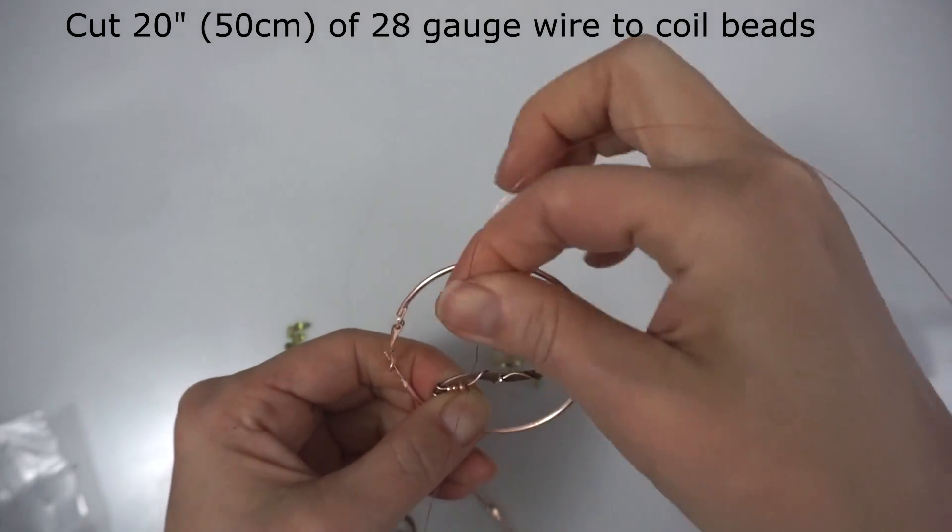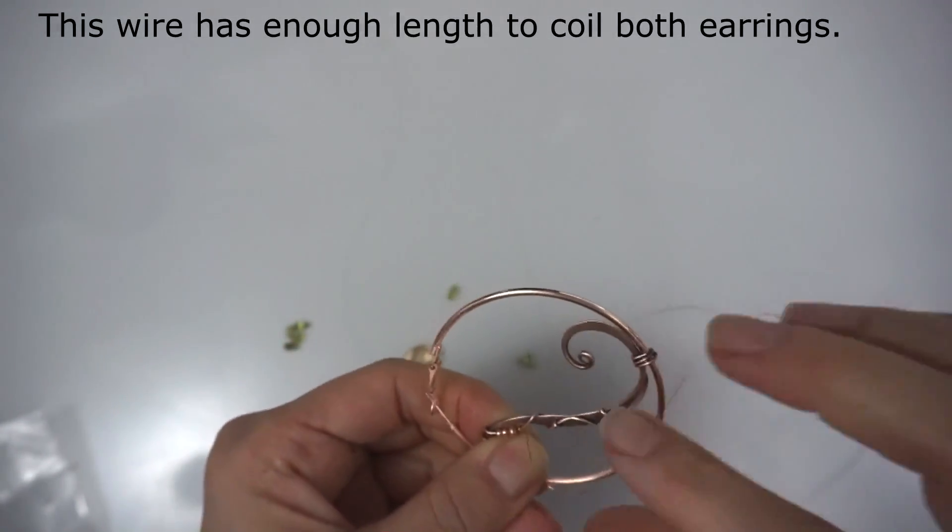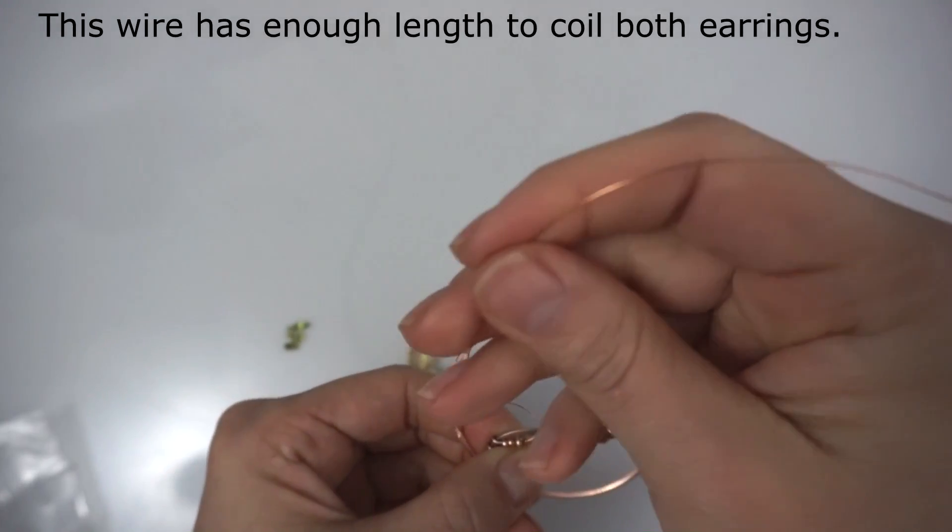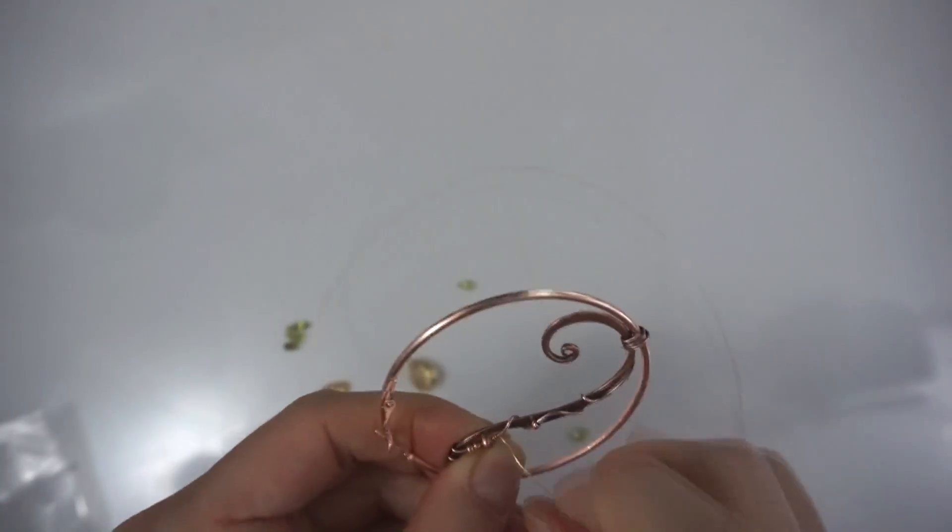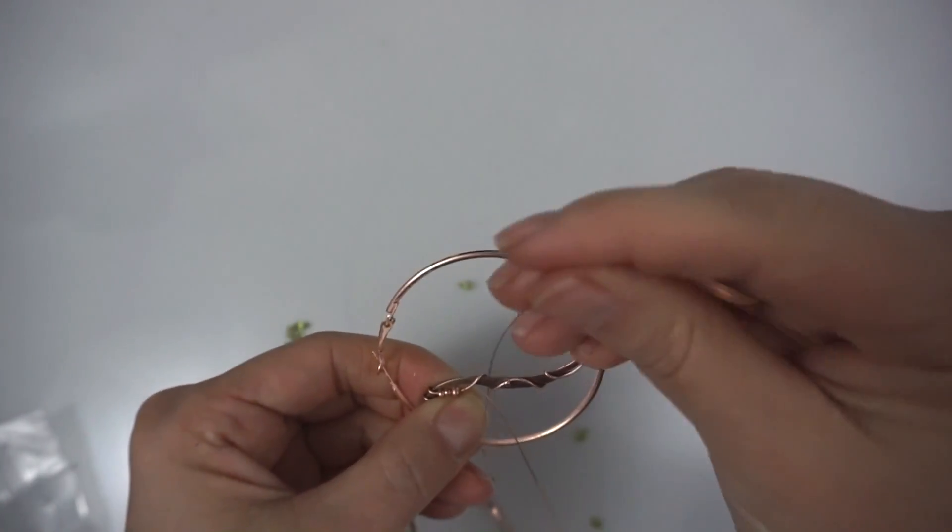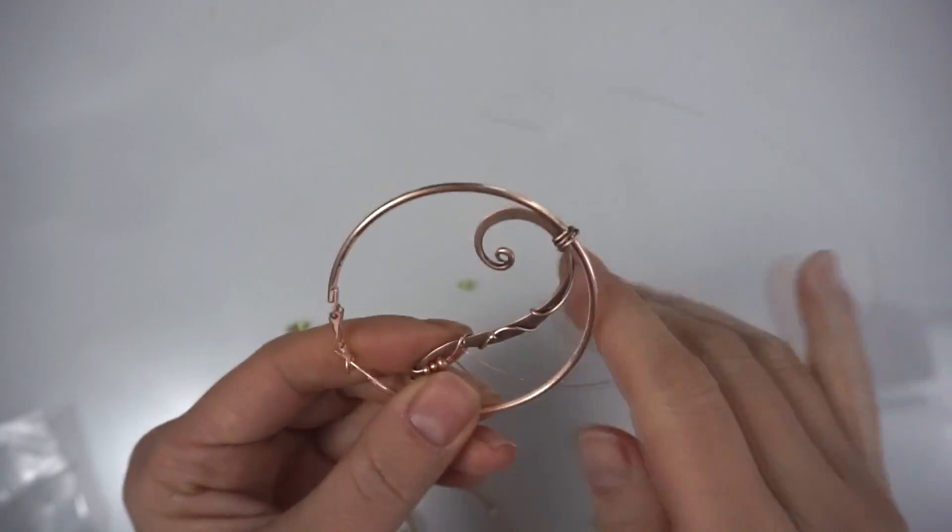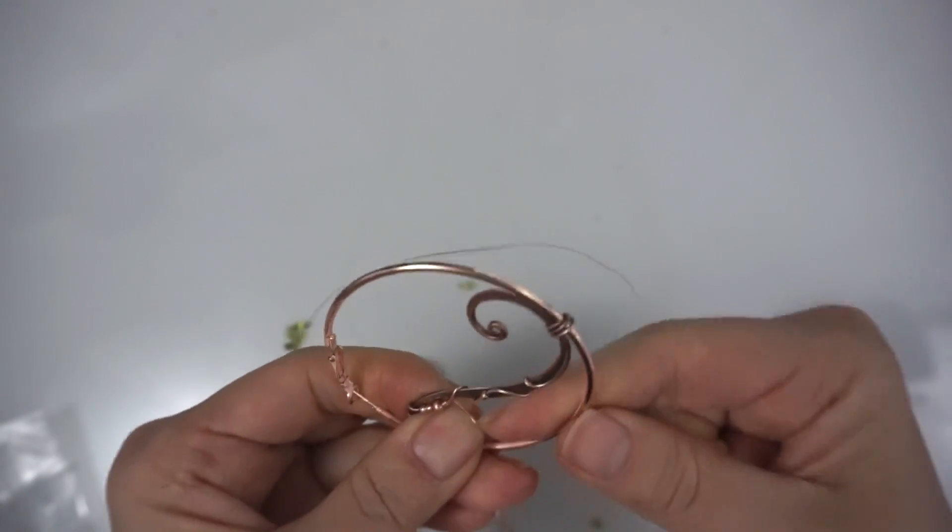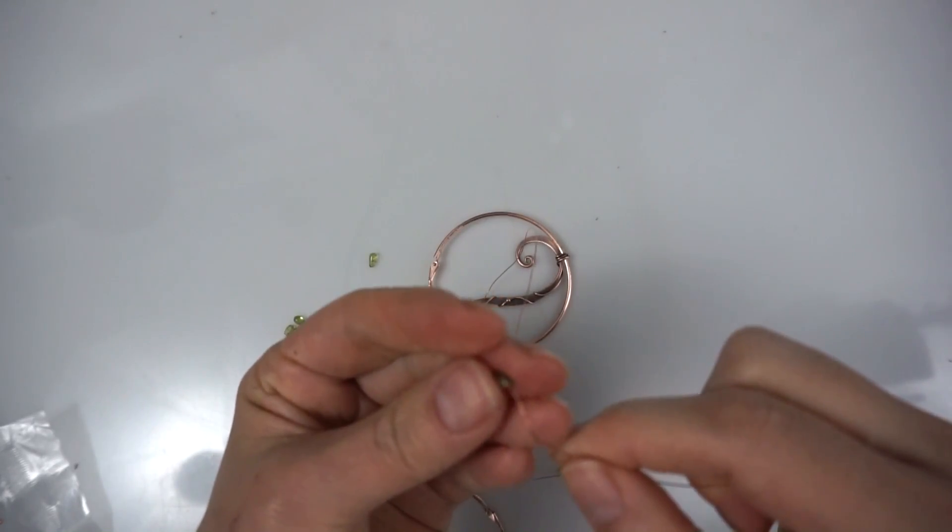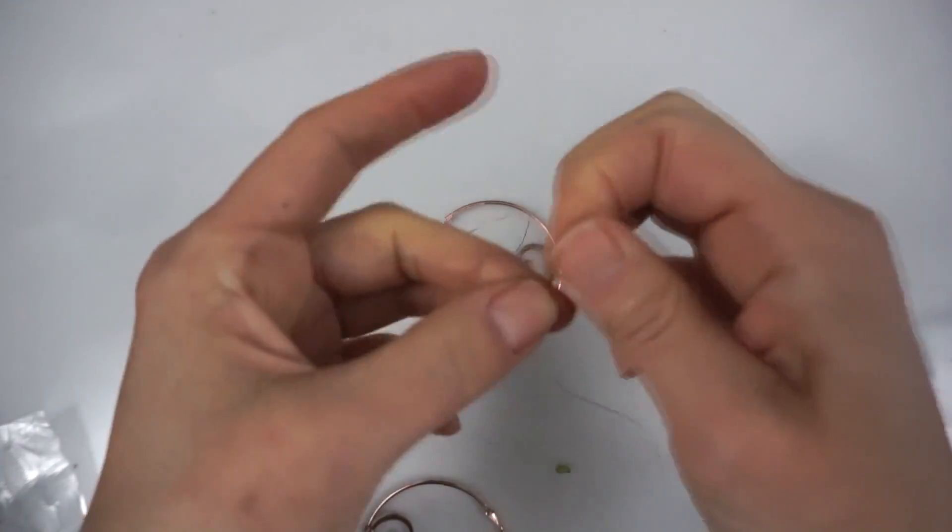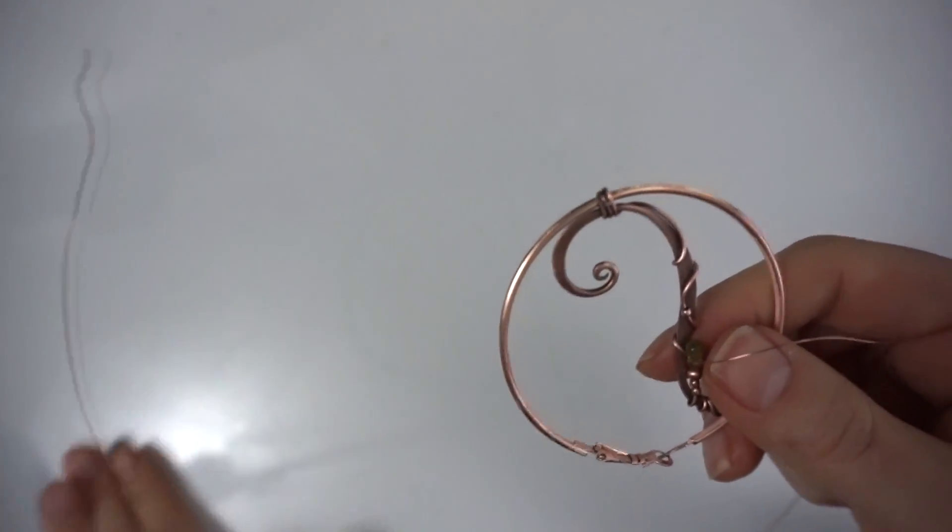I just coil on my 20 gauge wire a couple of coils to secure the 28 gauge wire, and then connect all my beads in the position I want them.